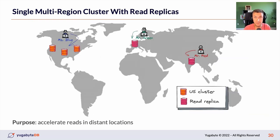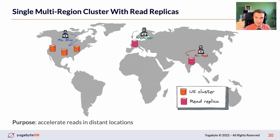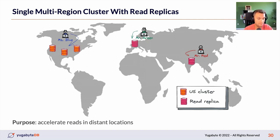Another use case is expanding with read replicas. In the United States I have a multi-node cluster running across several zones for high availability. Now I'm expanding to Europe and Asia. I want to accelerate reads for Mr. Green in Europe and Mr. Red in Asia — because most of the time people open the messenger and read, and only occasionally chat and send messages. It's easy to implement: you just attach read replica nodes to your geo-distributed database cluster. After you do this, the read latency for Mr. Green, Mr. Red, and Mrs. Blue will be low — probably under 5 milliseconds in Google Cloud.